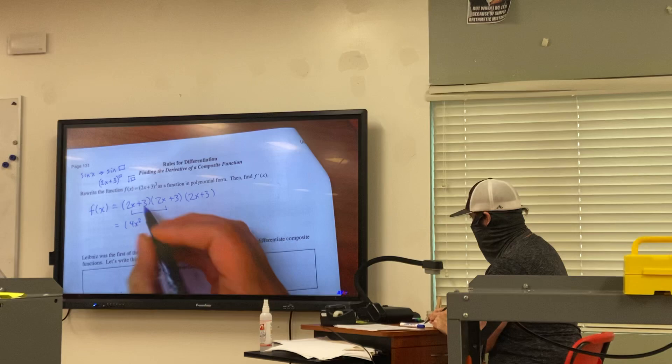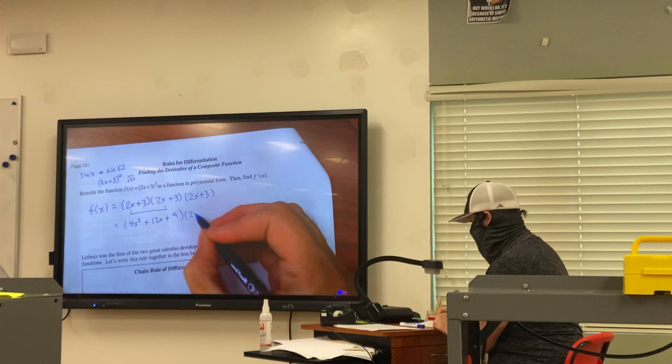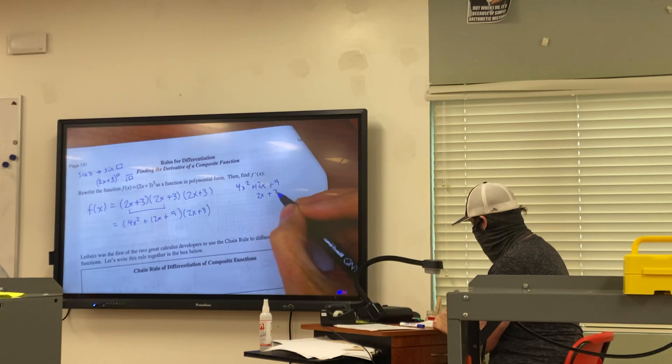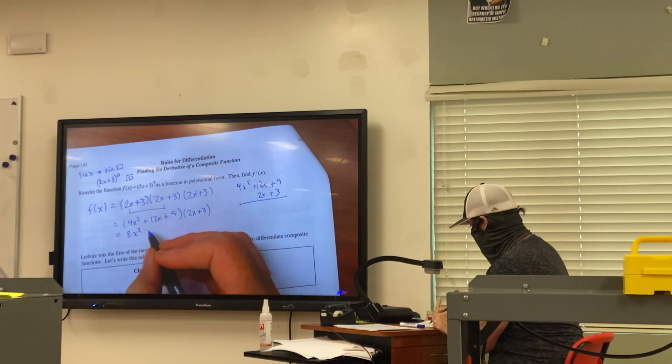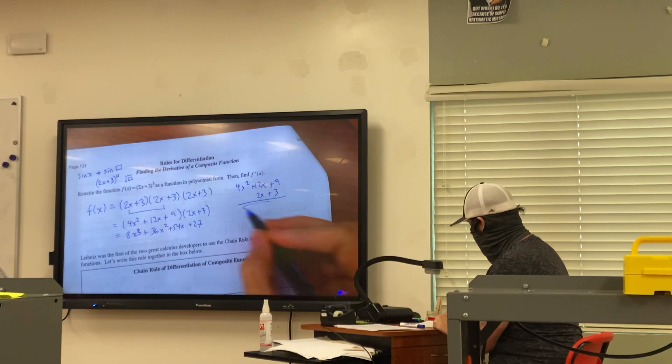And I'll save us some time and expand that for you. You get the first one, 4x squared plus 2x times 3 is 6x, 2x times 3 is 6x, 6x and 6x is 12x, and 3 and 3 is plus 9. And then still times this other 2x plus 3. Once you do all that work, you get 8x cubed plus 36x squared plus 54x plus 27. All right, that's the answer.